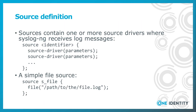A source definition is a collection of one or more source drivers. It consists of two parts. It starts with the word 'source', followed by a source identifier, which you will use later to refer to a given source. After that, it lists the source drivers and their parameters. Here is an example source definition and how its syntax looks like.